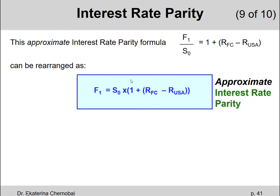We are rearranging it one last time as follows. One year forward rate F1, that's all we have on the left-hand side, equals today's spot exchange interest rate S0, multiplied by, open parenthesis, one plus the difference between the foreign countries' risk-free rate and the US' risk-free rate, close parenthesis.